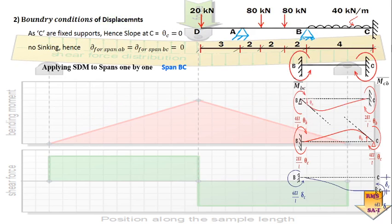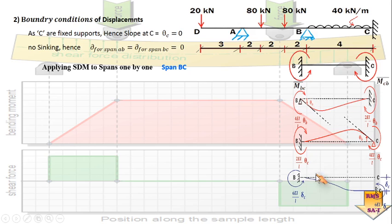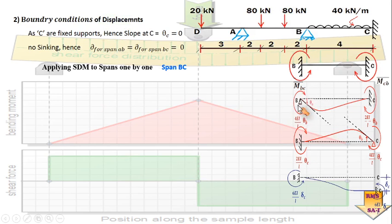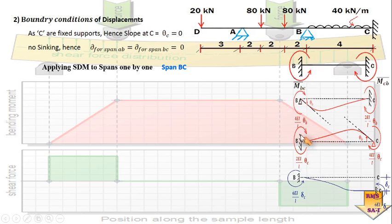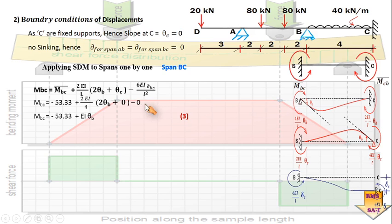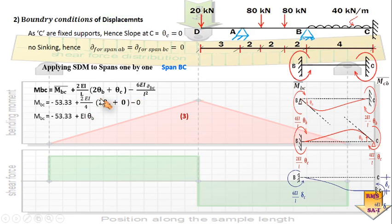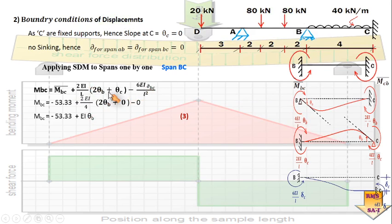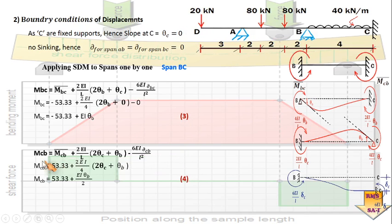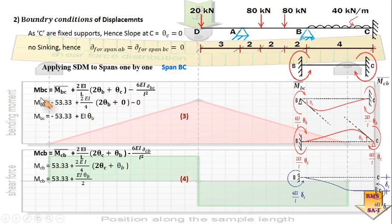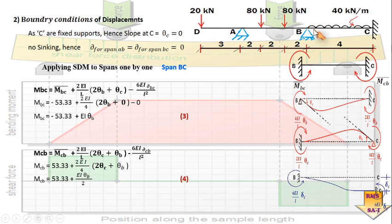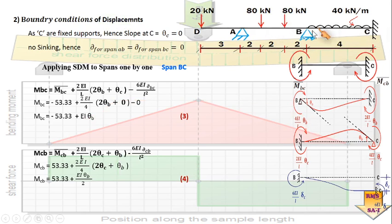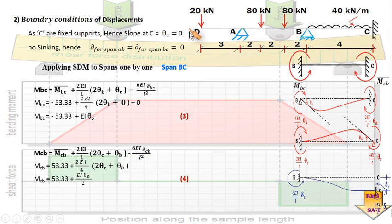For the second span BC, the same free body diagrams and active forces are shown. An appropriate governing equation is selected for that individual span, and putting all appropriate values into the formula, we get equation number three. Similarly working out MCB gives equation number four. So we now have MAB, MBA, MBC, and MCB — all four equations — to be further utilized.